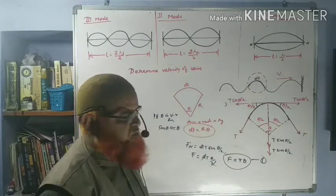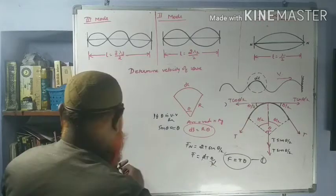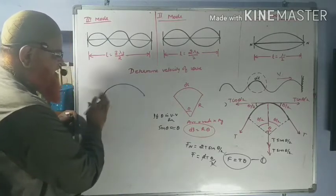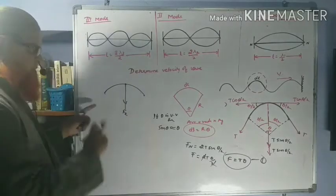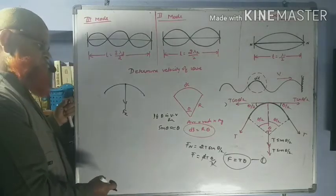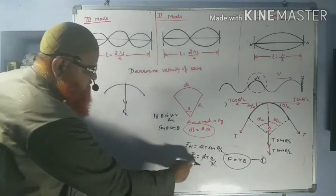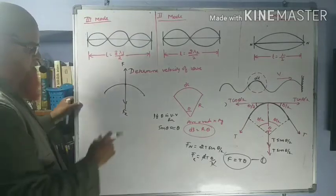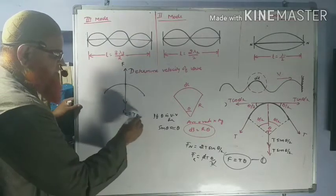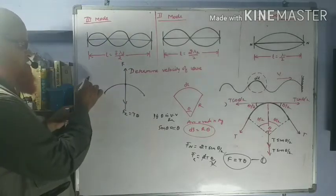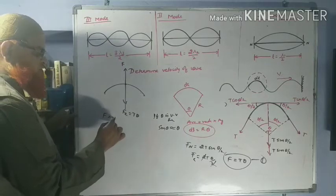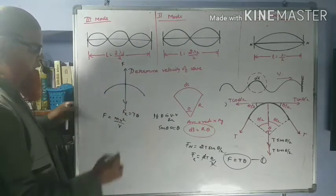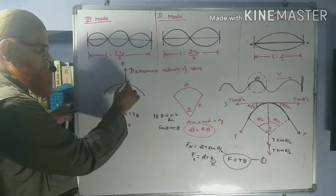Now, what are the remaining forces acting on this part of the string? We can consider that centrifugal force is also acting on it. Centripetal force acts towards the center and centrifugal force acts away from the center. The formula for centrifugal force is MV²/r.